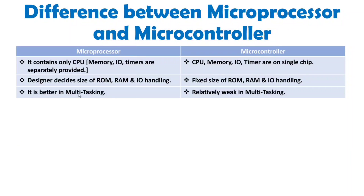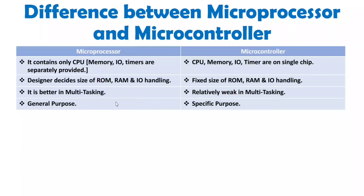When we talk about multitasking, a microprocessor is far better at multitasking compared to a microcontroller. A microprocessor is used for general purpose — for example, on a computer you can perform video editing, making presentations, writing programs, designing antennas, and many other things. But with a microcontroller, you need to be very specific; you cannot do as many things as with a microprocessor. It is therefore for specific purposes.